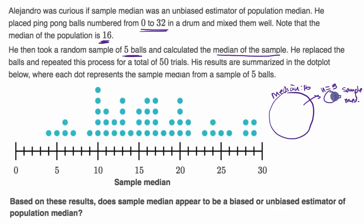So he does this. He takes these five balls, puts them back in, then he does it again, and every time he calculates the sample median for that sample and he plots that on the dot plot.